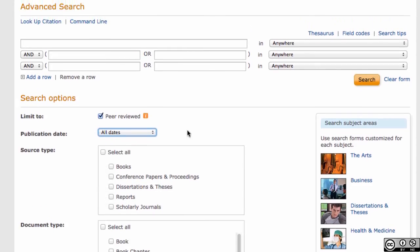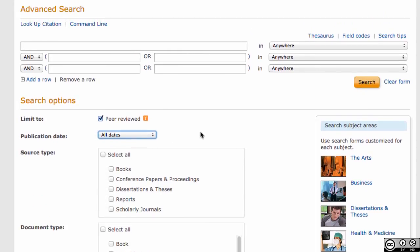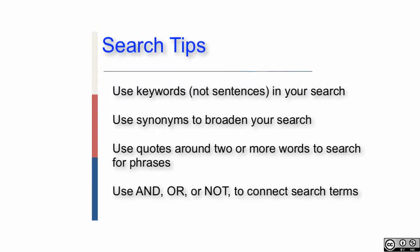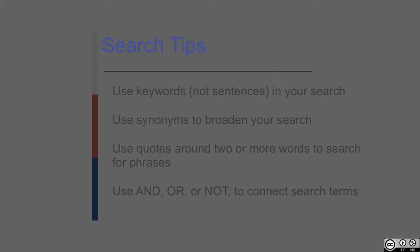Some search tips that will work in almost any database: use synonyms if your keywords are not bringing back enough relevant search results. For example, instead of just searching teenager for your target population, search teenager or juvenile or adolescent to broaden your search.